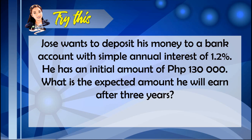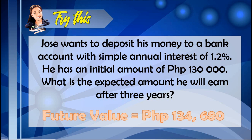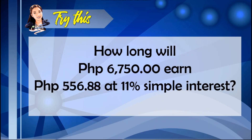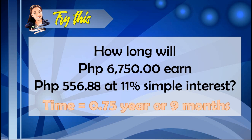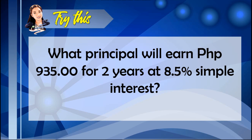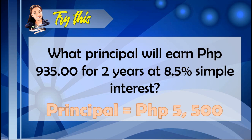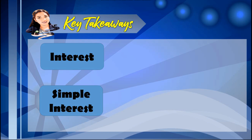After discussing how to find the simple interest, the present value, and the future value, try the following examples — you may pause the video to answer. The answer to the first problem: the future value is 134,680. Try another example. The answer here is 0.75 years or 9 months. Try another one. The answer here: the principal value is 5,500.